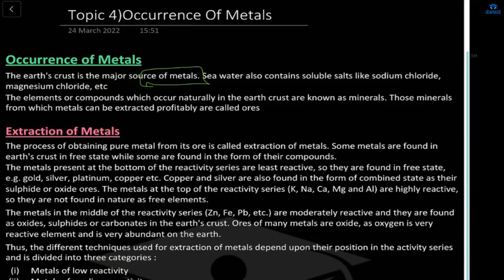We already know that the earth's crust is the major source of metals — there are lots of geothermal effects. If we dig into the earth we get many different kinds of metals. Seawater also contains soluble salts like sodium chloride (NaCl) and magnesium chloride (MgCl2), so oceans, seas, and ponds all contain salts.